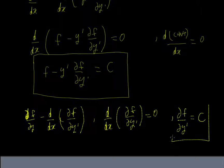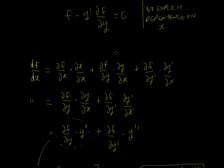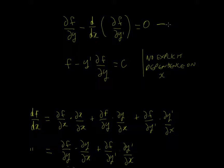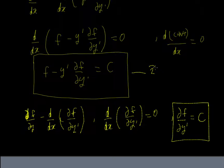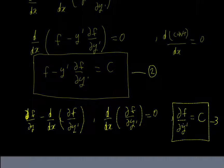So now we have three equations we'll use in our worked examples: equation 1 is the Euler-Lagrange equation, equation 2 is the Beltrami identity, and equation 3 is partial f upon partial y' equals a constant. That's the end of this video. In the next video we'll start doing examples — I'll try to get through around 15 different examples to give you a good flavor of the power of the Calculus of Variations. Thank you for listening and goodbye.